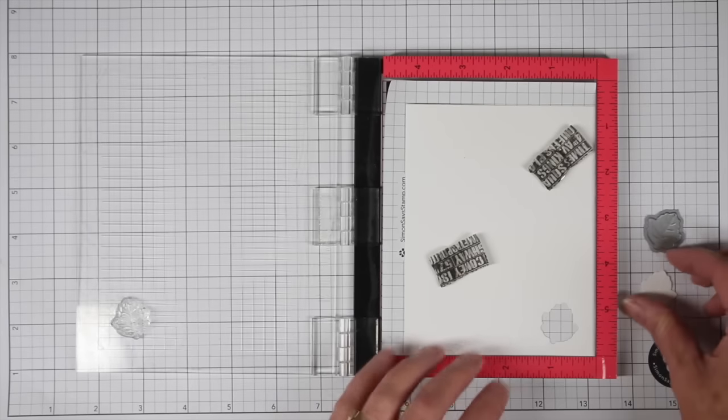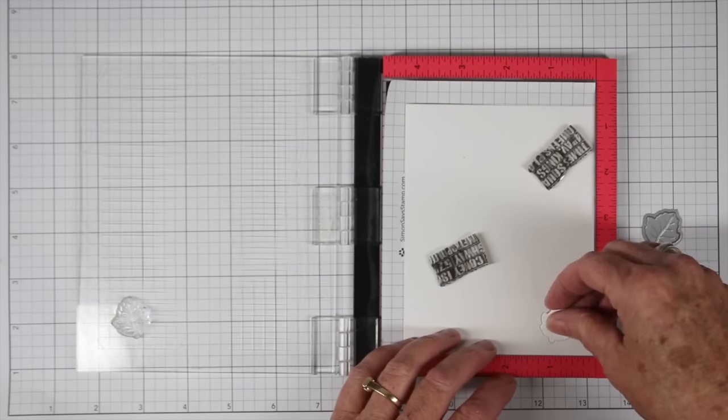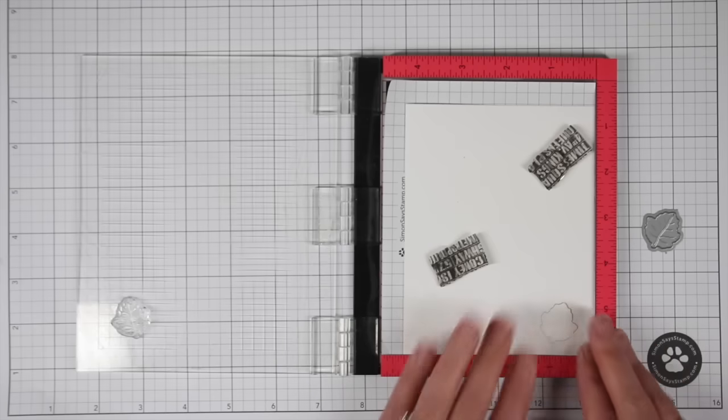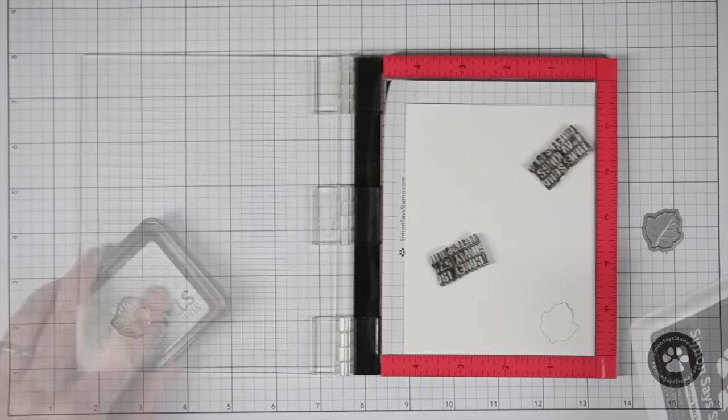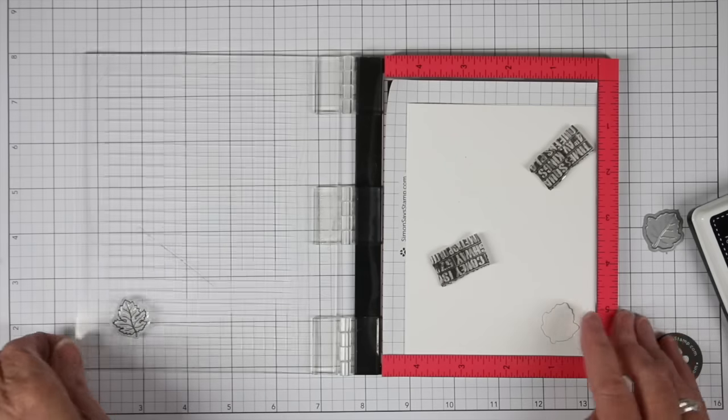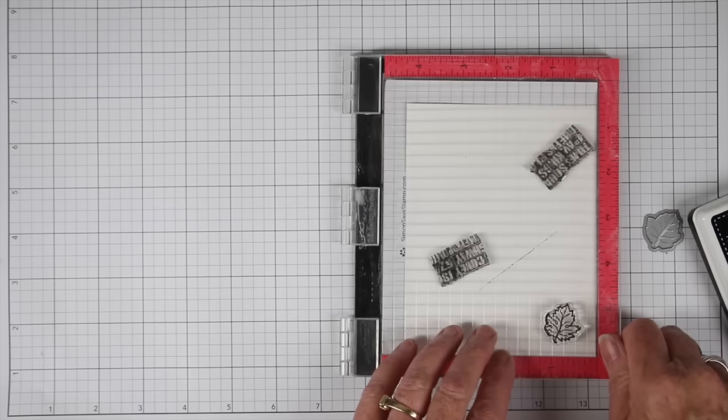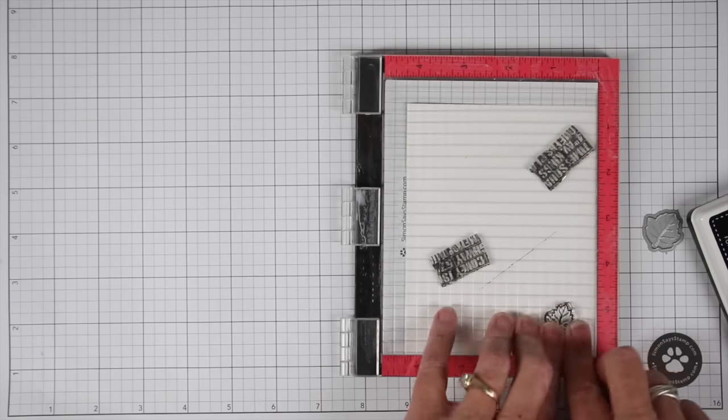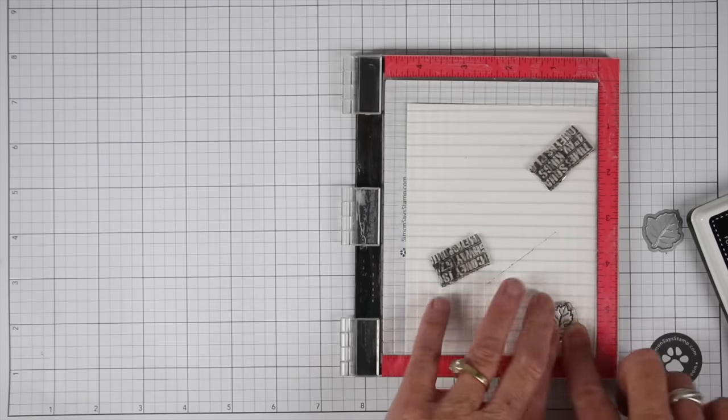Now I have my leaf in place and I can go ahead and put the leaf right back into the hole and I can ink up my stamp and once that's well inked I can go ahead and close the door and stamp right on to that little piece that's already been die cut.